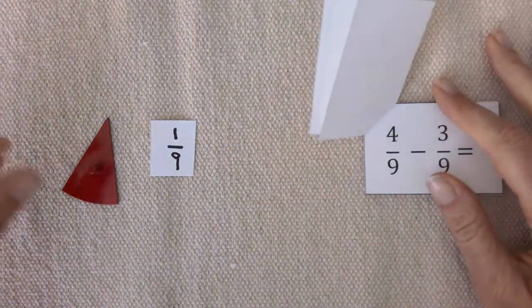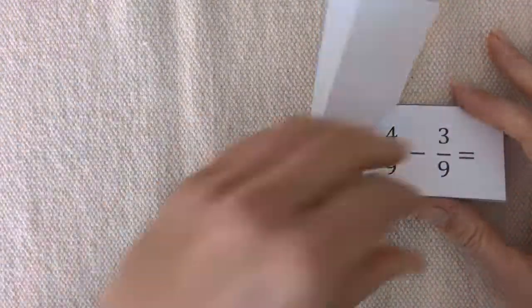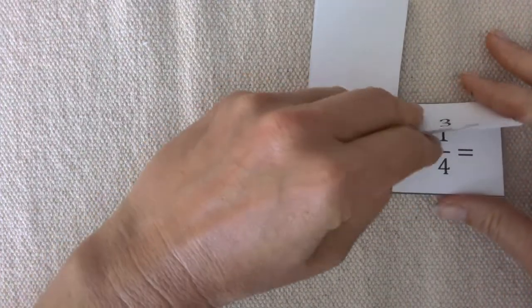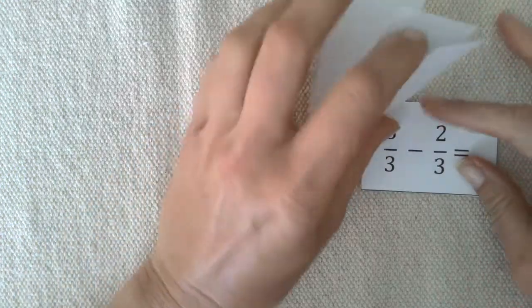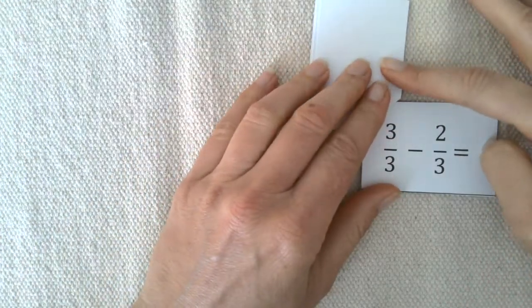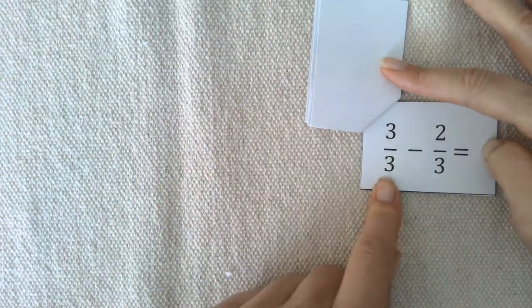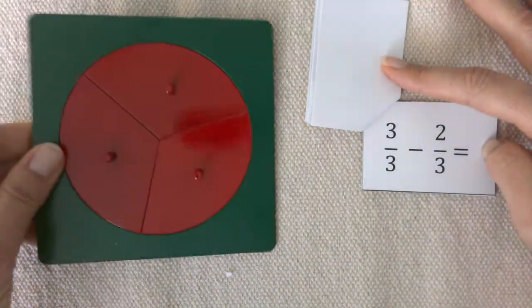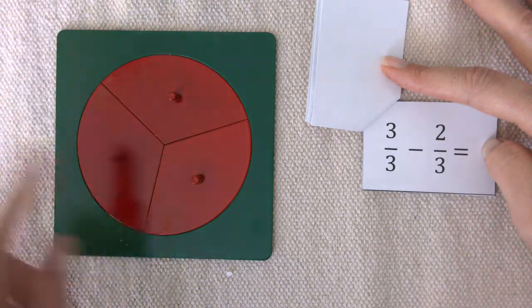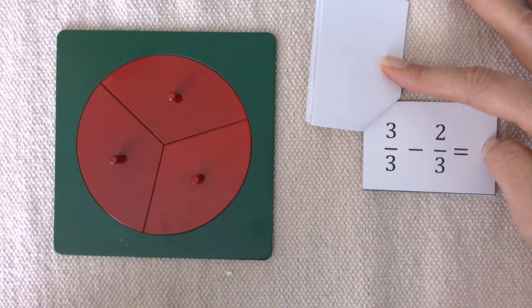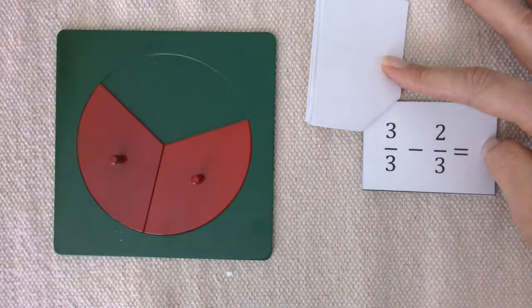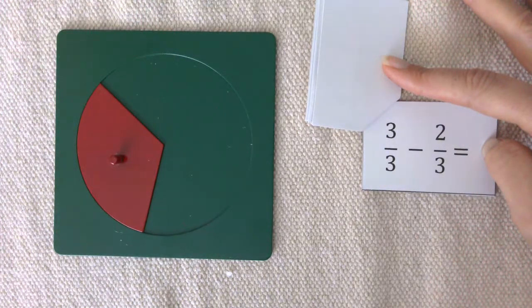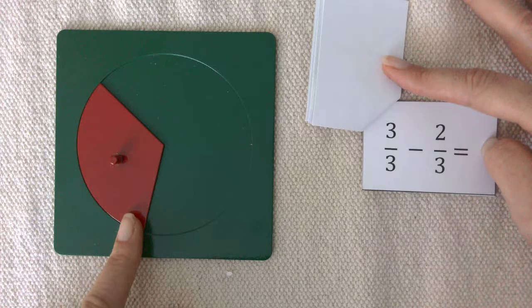Let's do one more example. I need 3 thirds. Let's take 2 of them away. What are we left with? Let's write 1 third.